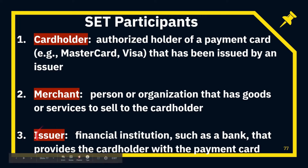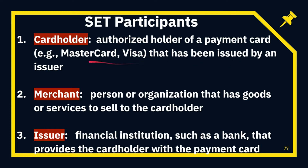The third participant is the issuer. The issuer provides the cardholder with an authorized credit card. The issuer is a financial institution — normally, we consider a bank. If you have a payment card or credit card, it will be issued by a bank.